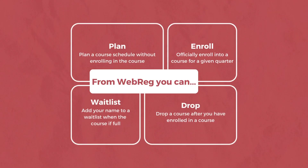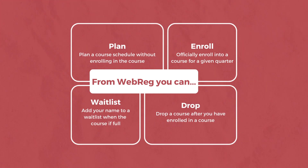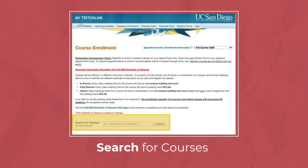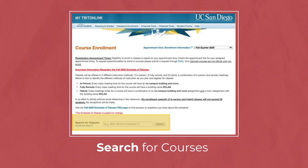WebReg is our online system that allows you to plan, enroll, waitlist, and drop courses. After you have logged into WebReg, you can start by selecting the quarter and year you would want to search for courses, and then you can search for courses.